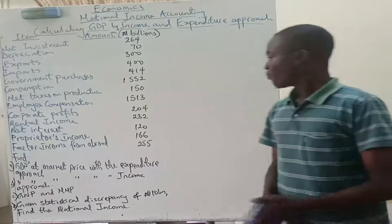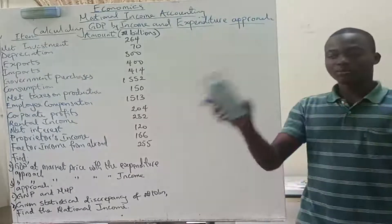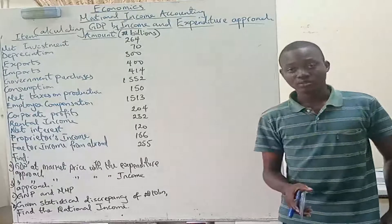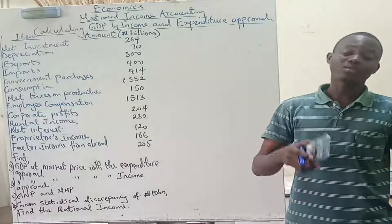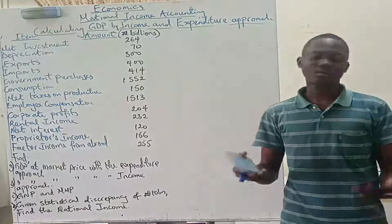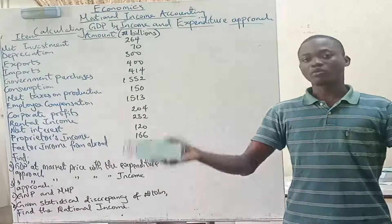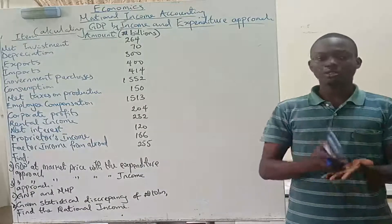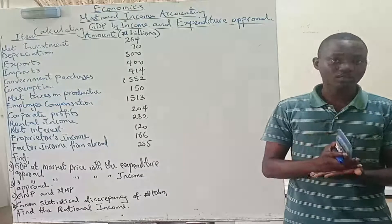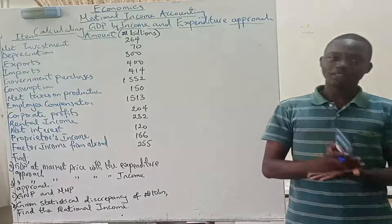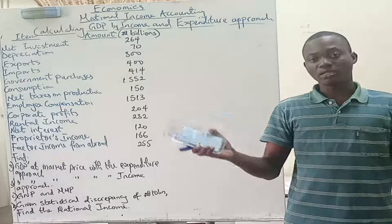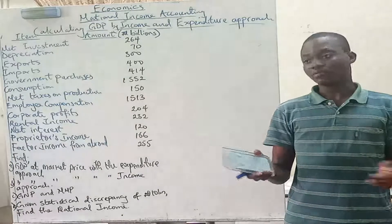The total economy is divided into four components: households, firms, the government, and the rest of the world. The sum of households and firms gives you the private sector; the government gives you the public sector; and the rest of the world gives us the foreign sector.